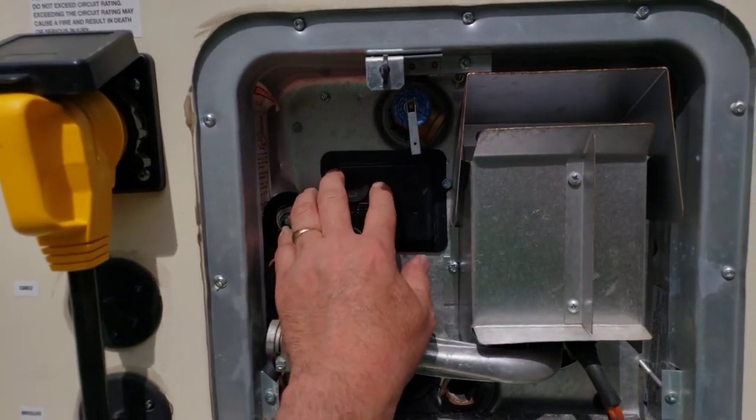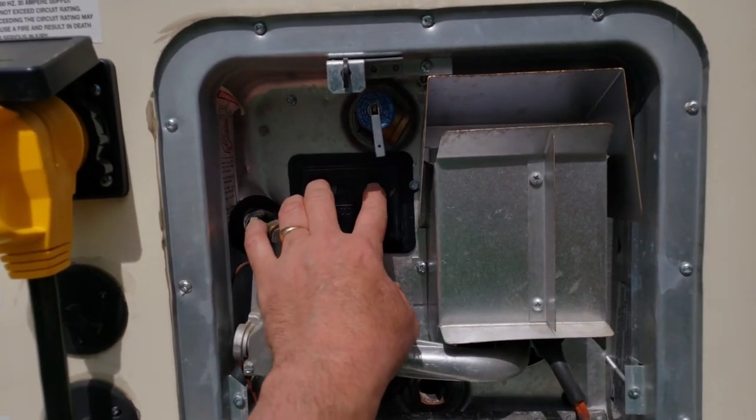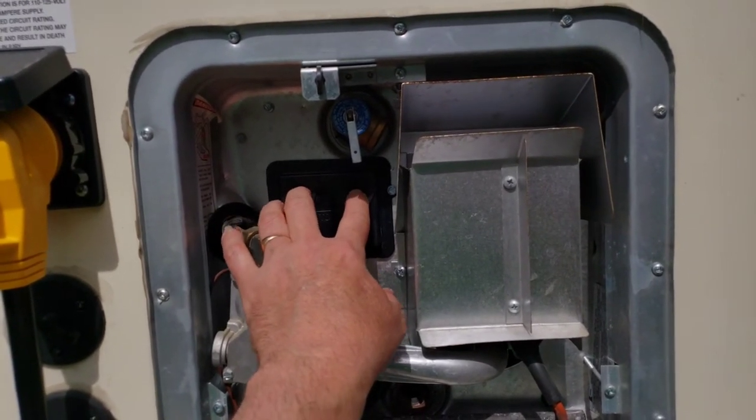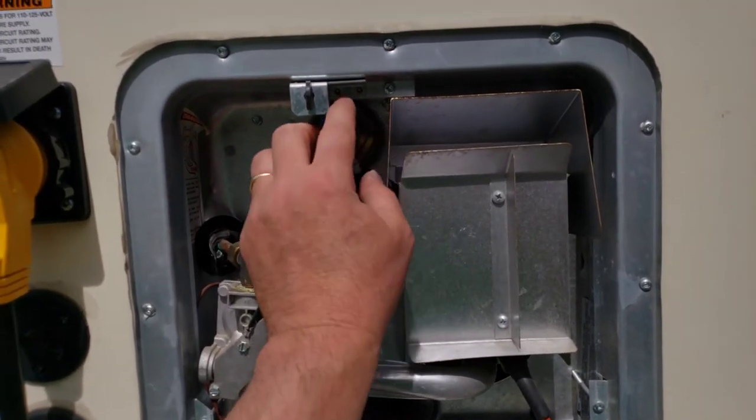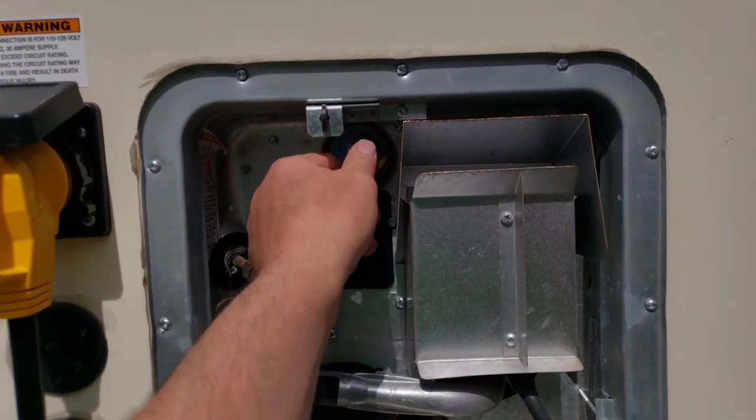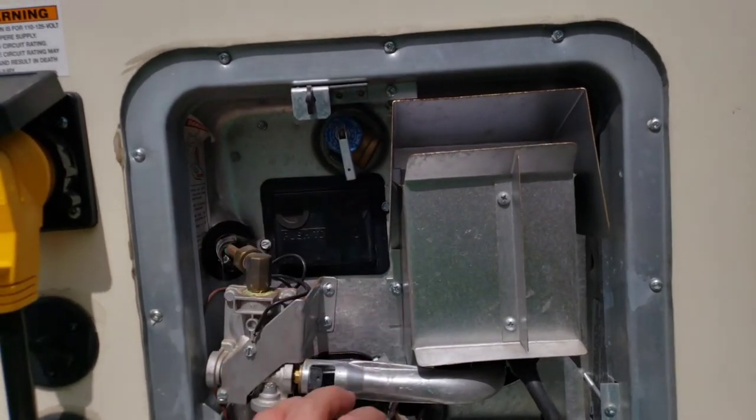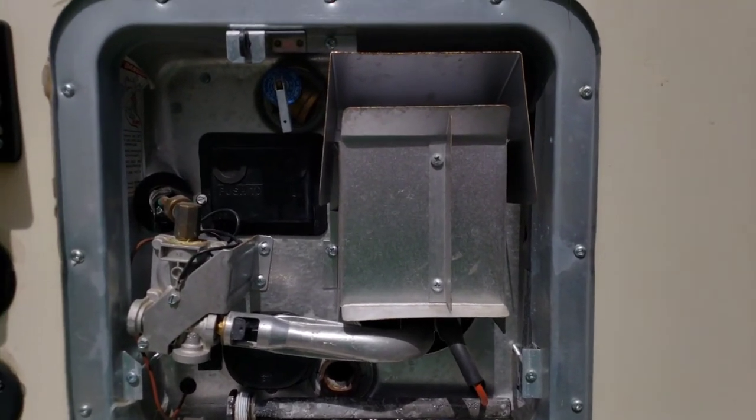So over here, we have our electrical resets. When you're hooked into shore power or a generator, those could trip. So if you're having issues, let's go side-check those first. And then this is the burper valve, slash pressure relief valve. So let's go inside and take a look.